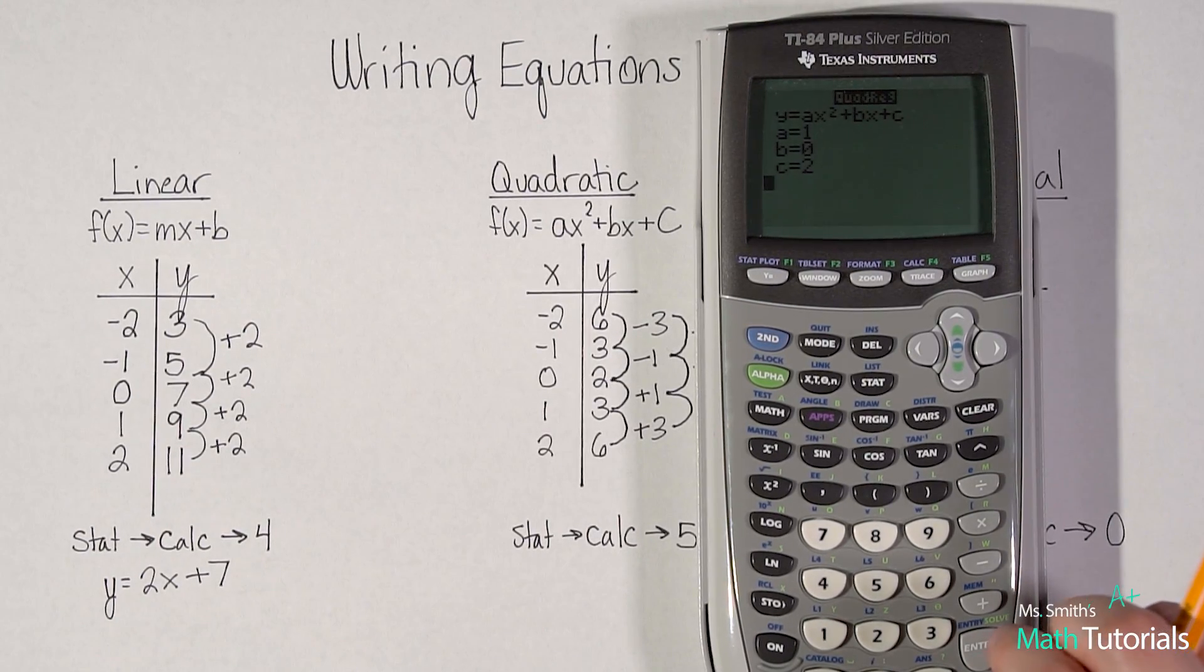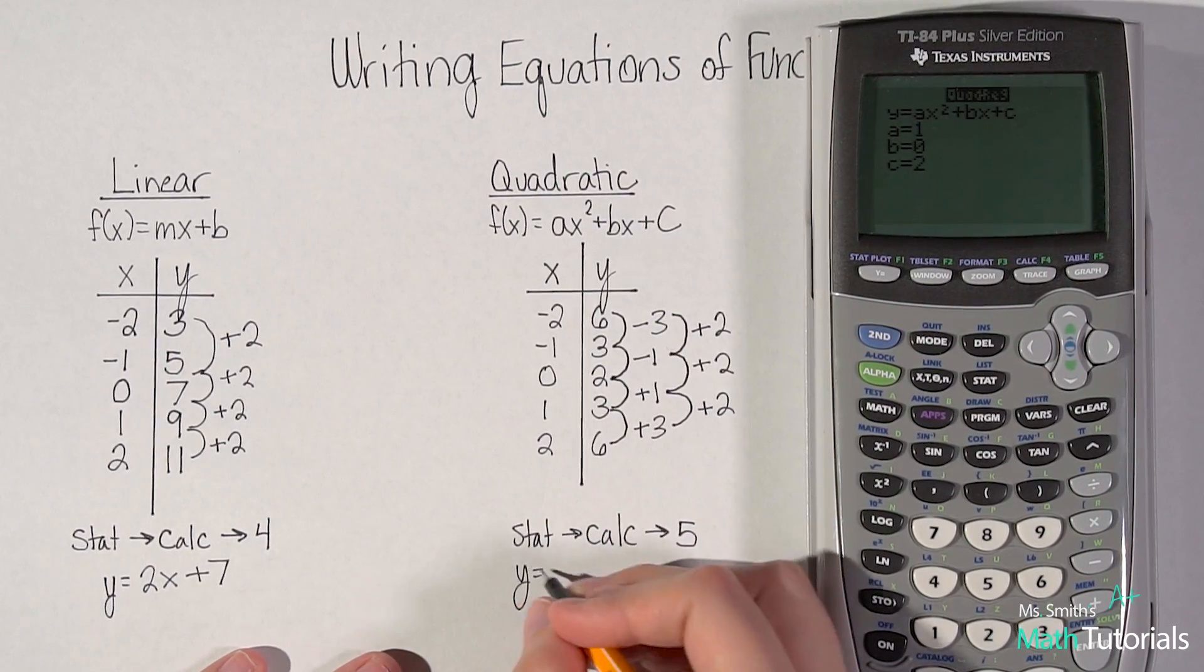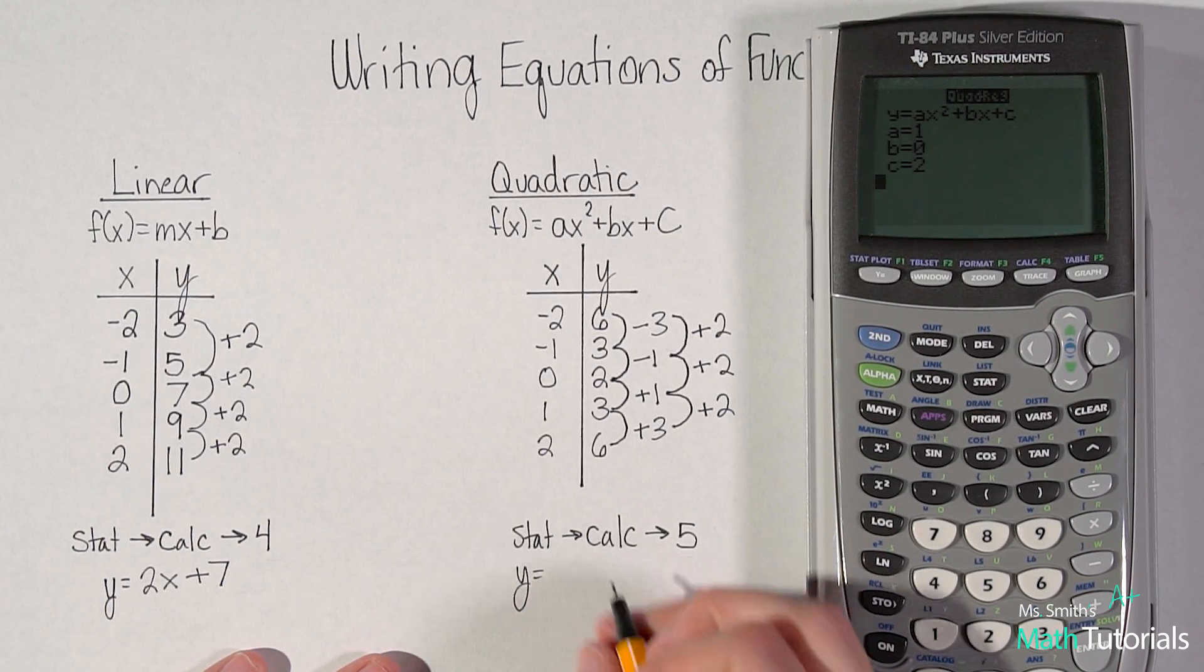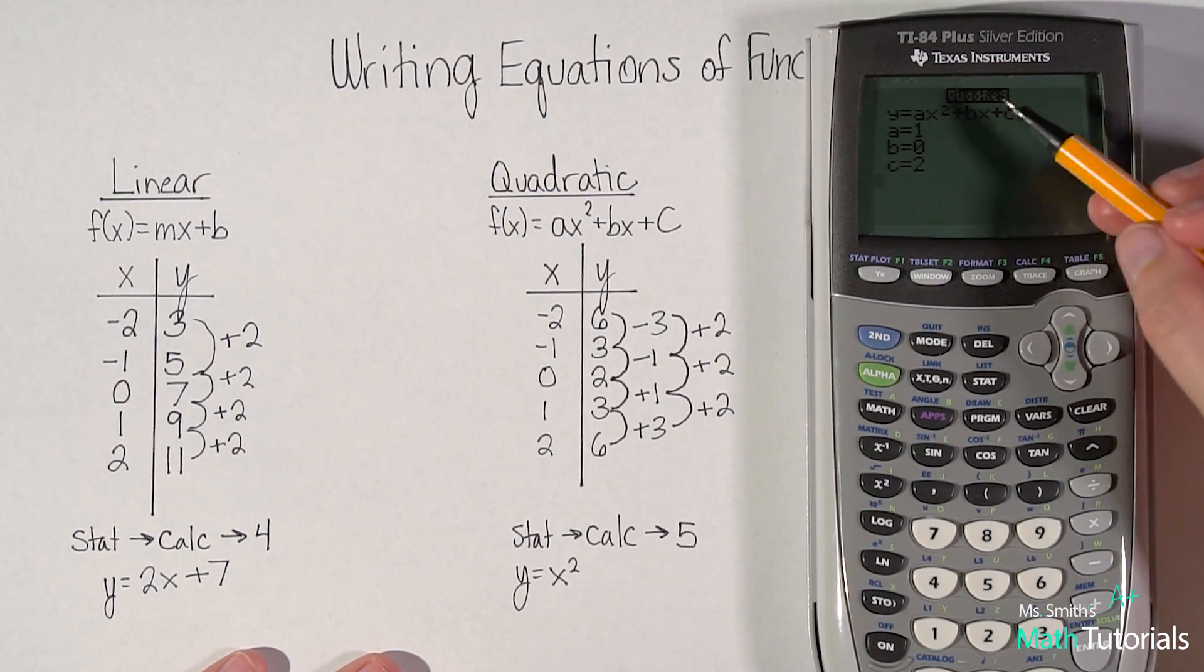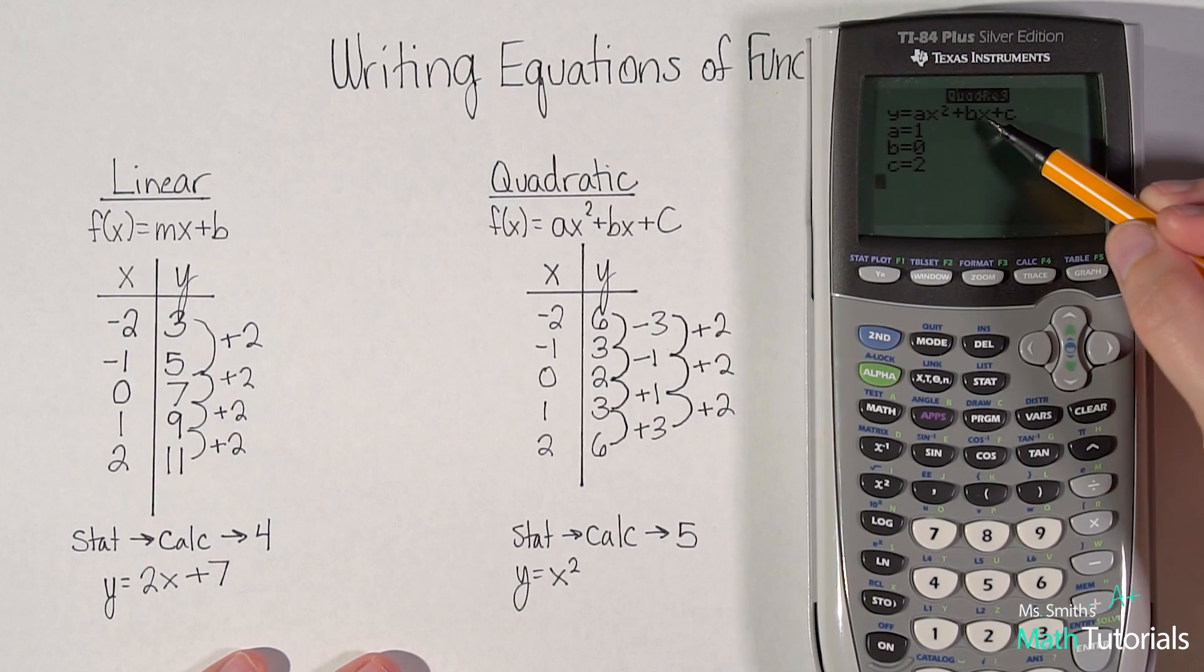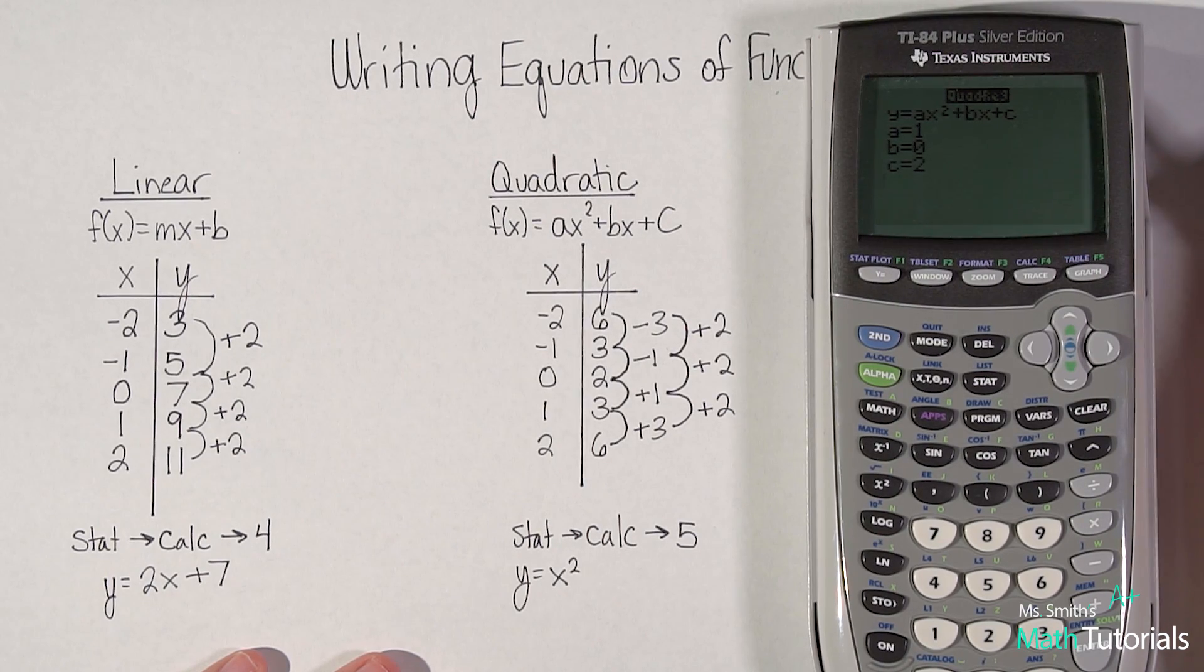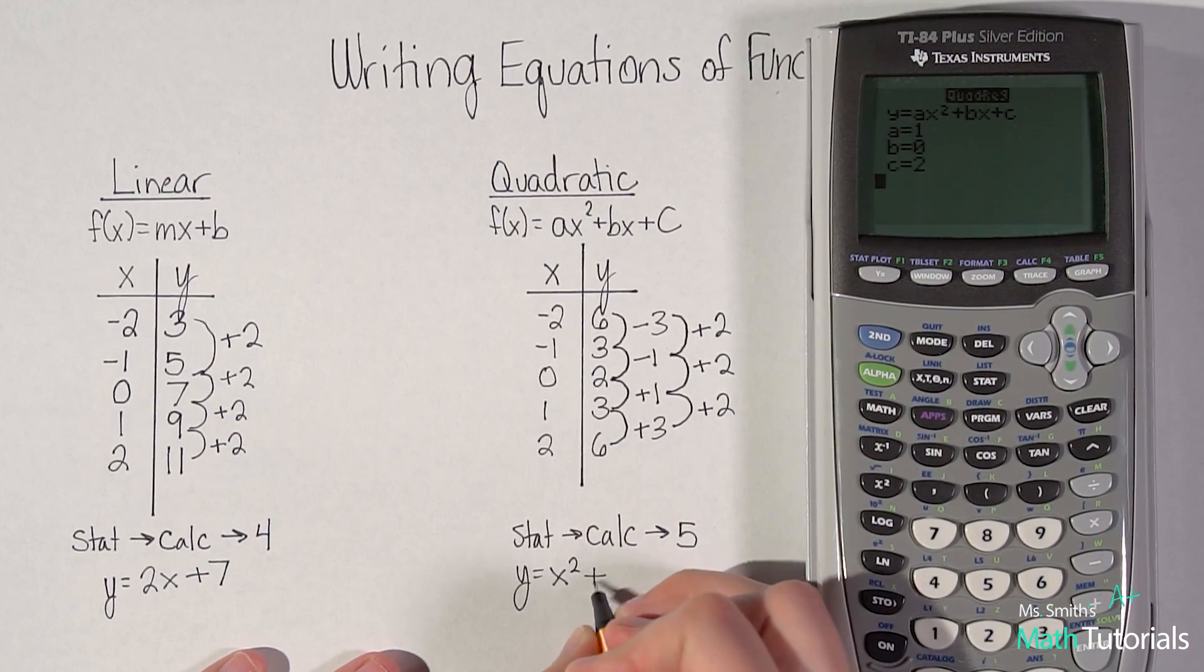And there's our equation. It's y equals, or you can say f(x) equals, if we're being real specific about it. A is one, so just x squared or one x squared, plus bx. Now it says our b value is zero. So do I write in here plus zero x? No. Because I know zero times whatever x is would cancel out to zero. A zero there tells me that I just leave the b out. And then c would be two, so plus two.